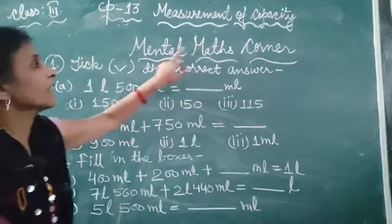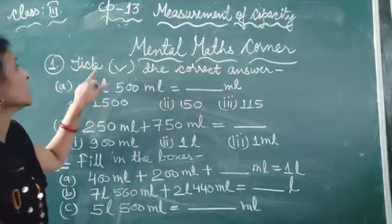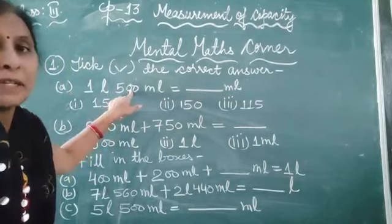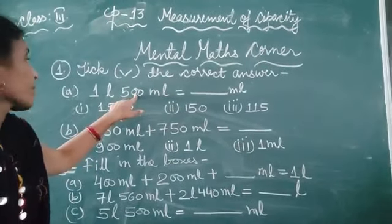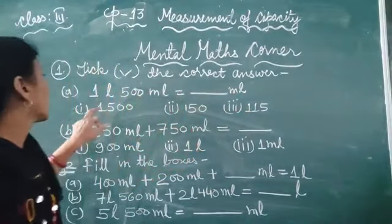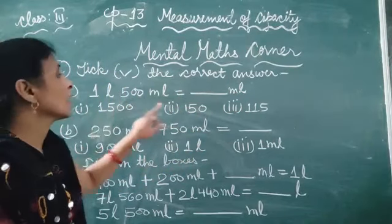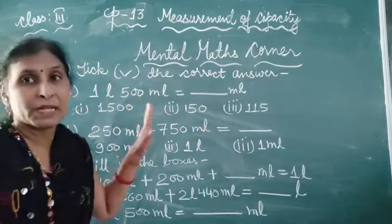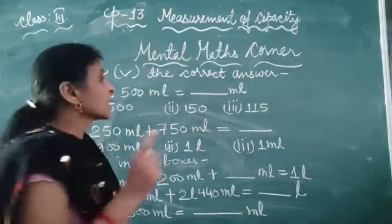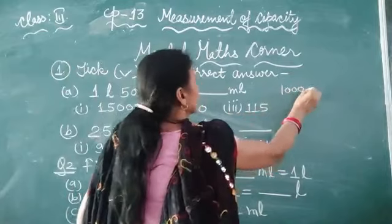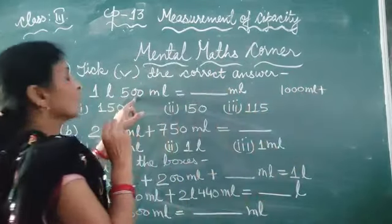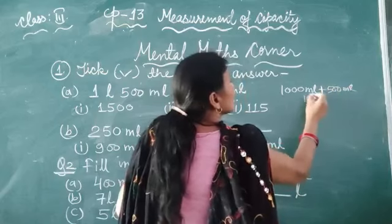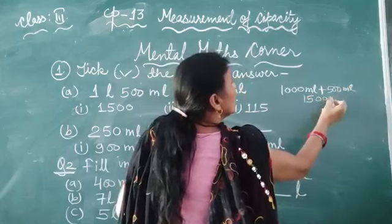Now mental maths corner. Question number 1 — pick the correct answer. Part A: 1 litre 500 millilitre is equal to how many millilitres? Options are 1500, 150, and 15. First convert litre into millilitre — 1 litre equals 1000 millilitre, plus 500 millilitre equals 1500 millilitre. Our answer is 1500 millilitre.